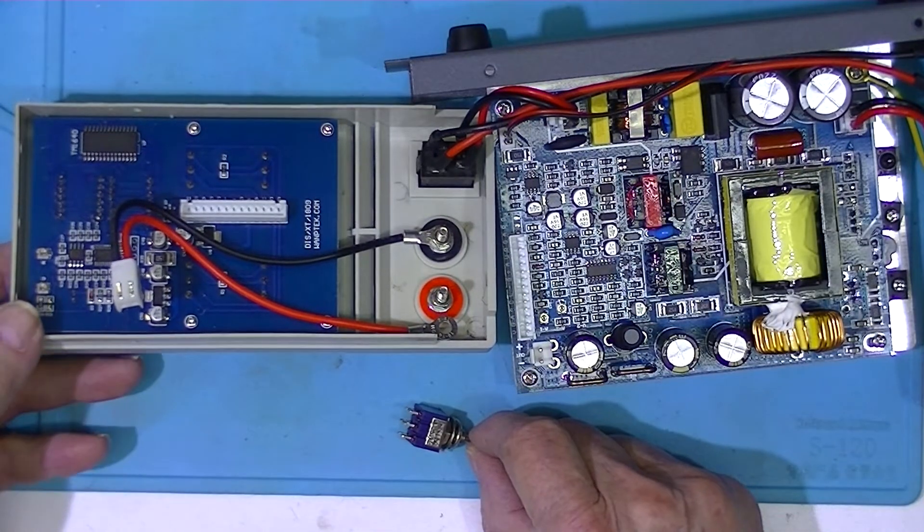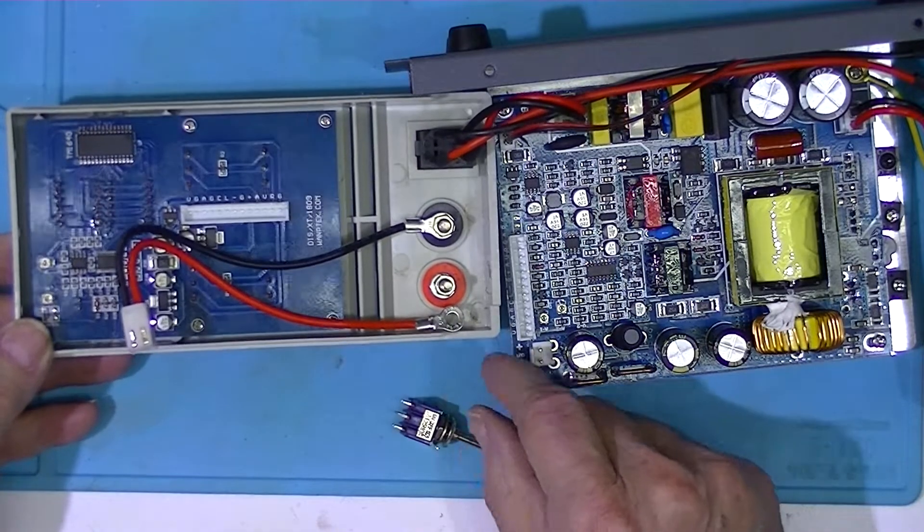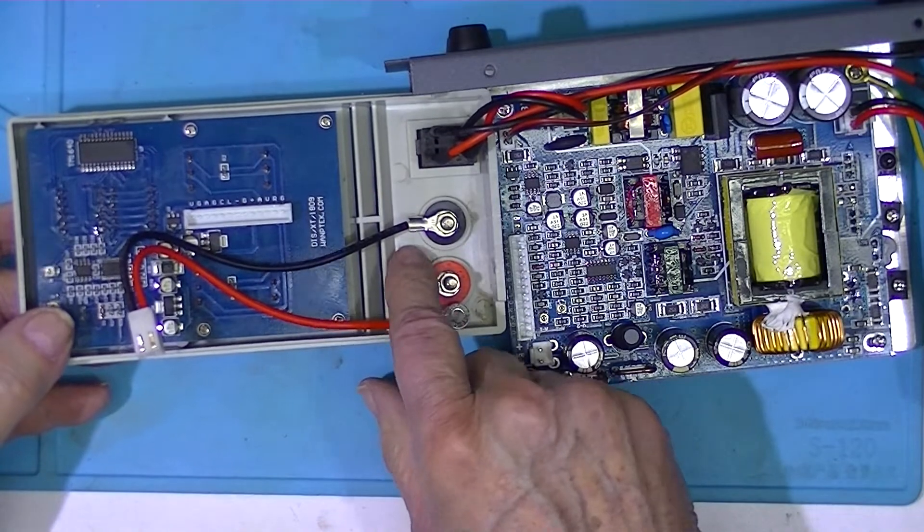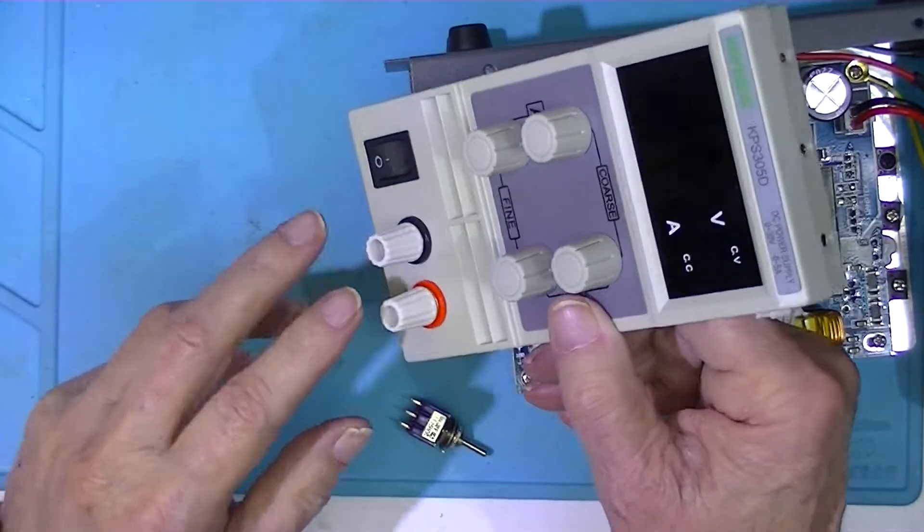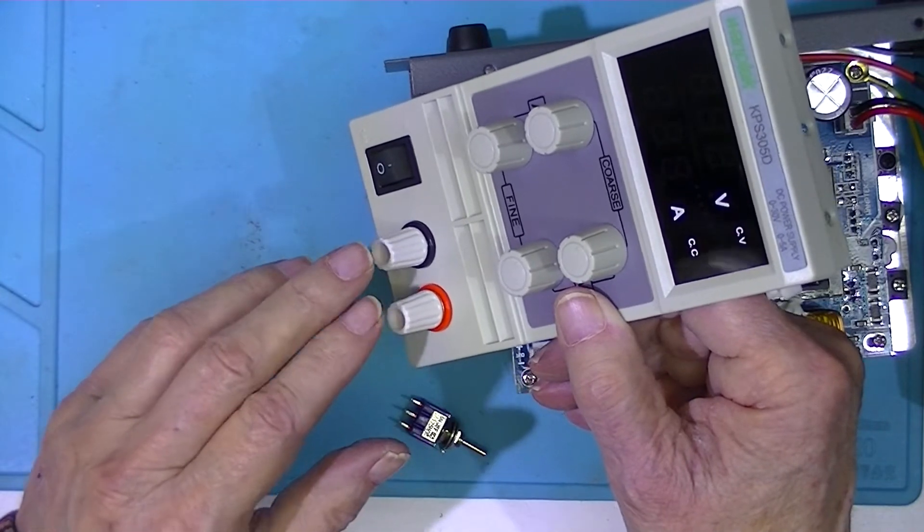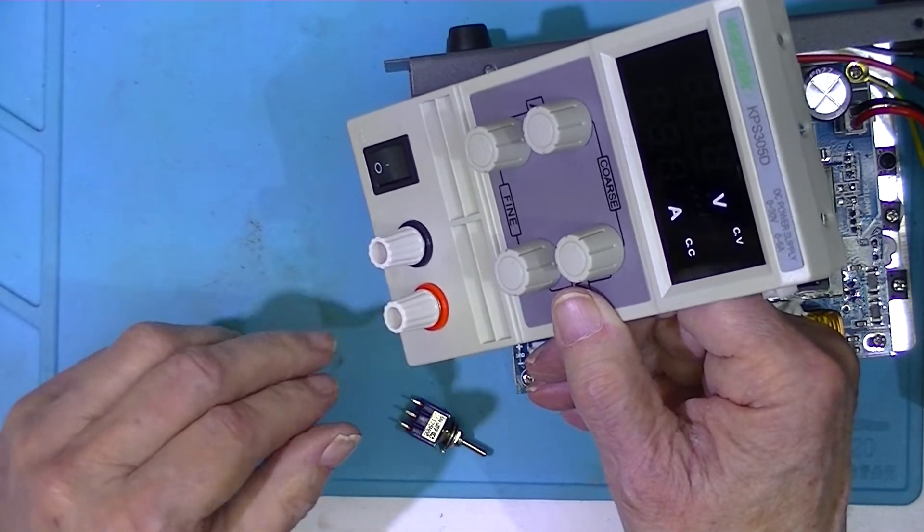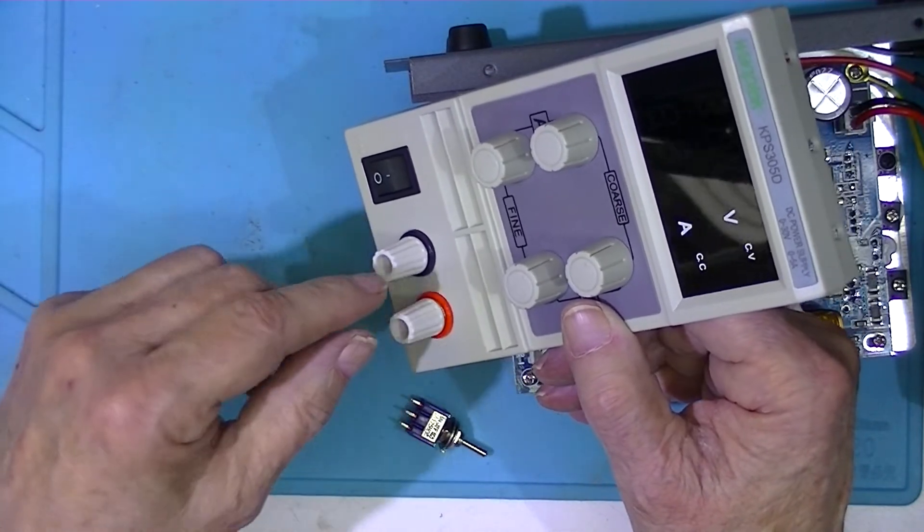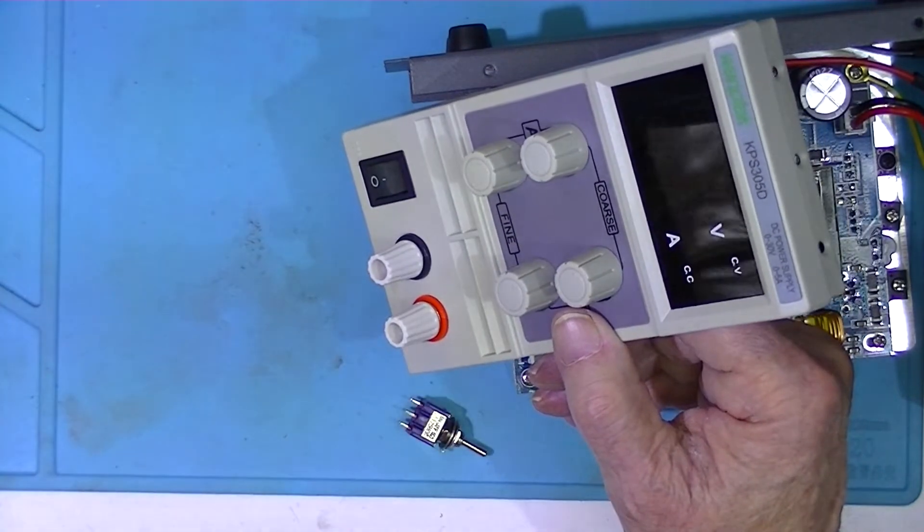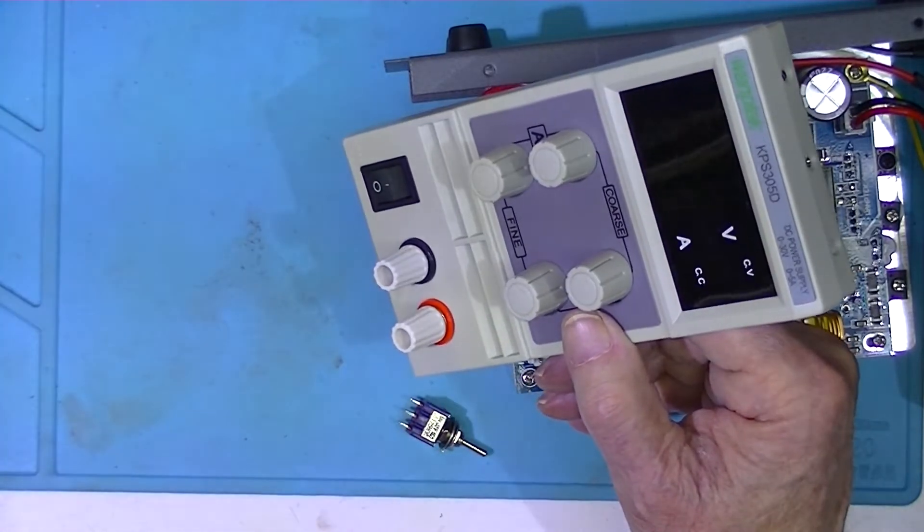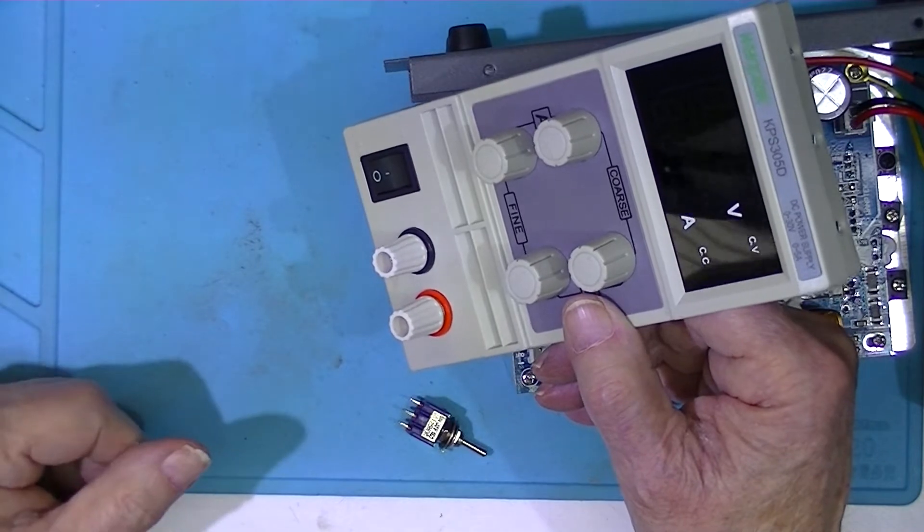The reason I've got it apart is because I want to put a load switch. I want to switch these two terminals off, on, and I want to short them. That way, I can set the voltage and the constant current, or the current limiting, before the load is powered up.